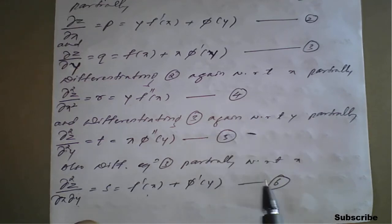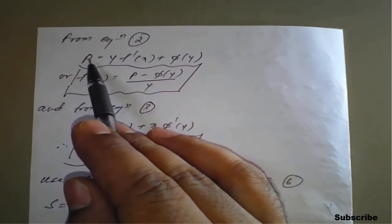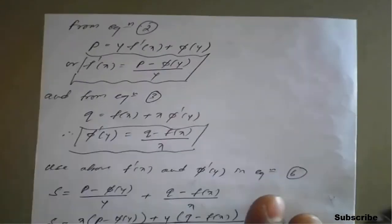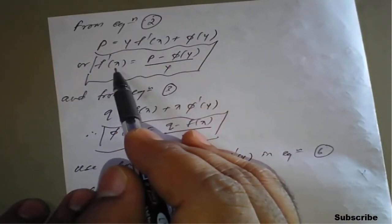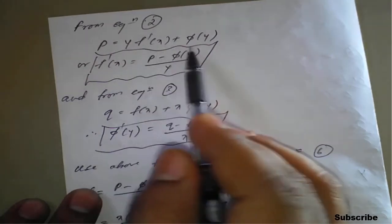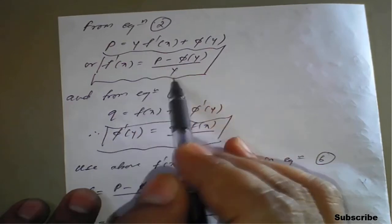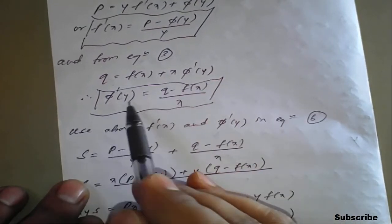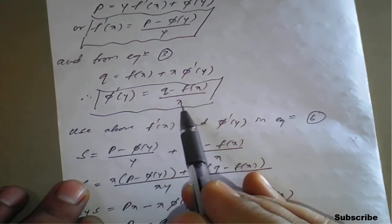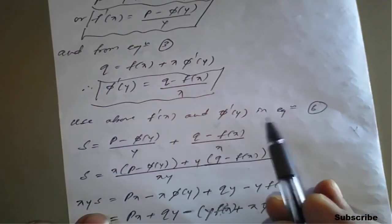With the help of equations 4, 5, and 6 we are going to simplify. From equation 2, p is equal to y into f dash of x plus phi of y. Rearranging, f dash of x equals p minus phi of y, all divided by y. Similarly, from equation 3, q equals f of x plus x times phi dash of y, so phi dash of y equals q minus f of x, divided by x. These two results will be used in equation number 6.